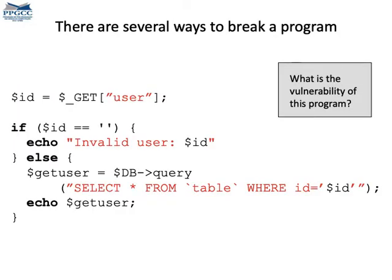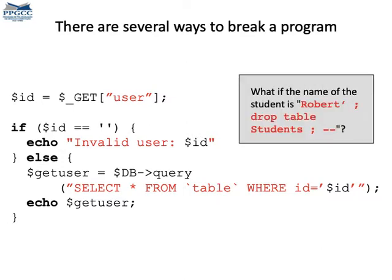Now let's look at another example of an unsafe program. This is a PHP program that accesses a database using a SQL query. Can you spot any vulnerability in it? Stop the video and read the code to think about it. The variable ID is merged with part of a SQL query to produce a valid SQL query, but ID can contain anything. Imagine it contains Bobby Tables's name, shown here in red — what would happen?